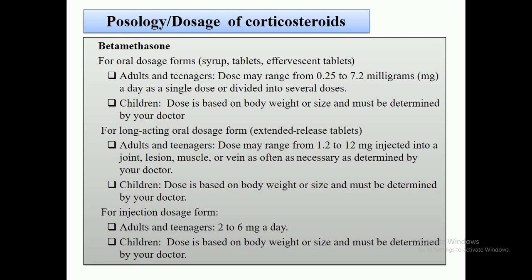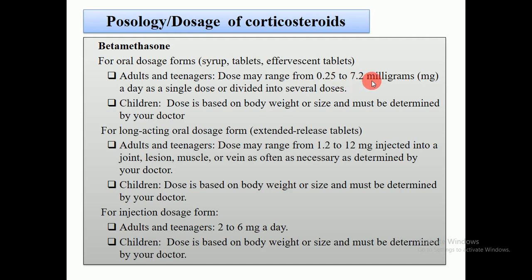Now we come to the pharmacology of corticosteroid drugs. There are different types of drugs available in different doses and dosage forms. The first one is betamethasone, which is pharmacologically a corticosteroid. For oral dosage forms, it is available as syrup, tablets, and effervescent tablets. For adults and teenagers, the dose may range from 0.25 to 7.2 mg a day as a single or divided dose.